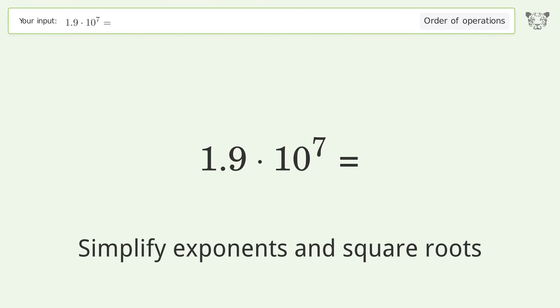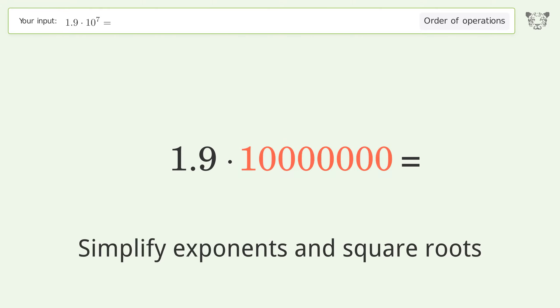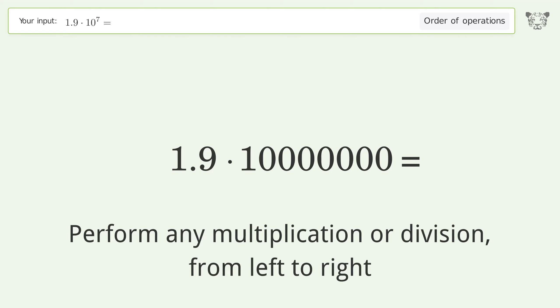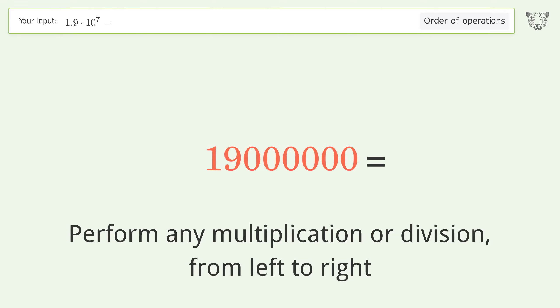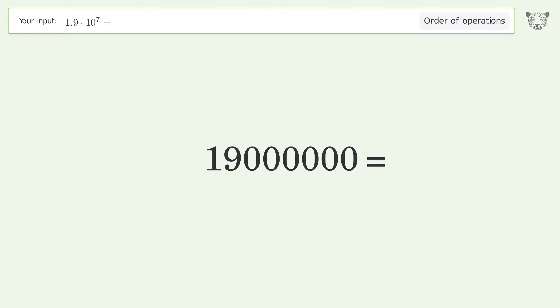First, simplify exponents and square roots: 10 to the power of 7 equals 10,000,000. Then perform any multiplication or division from left to right: 1.9 times 10,000,000 equals 19,000,000. So the final result is 19 million.